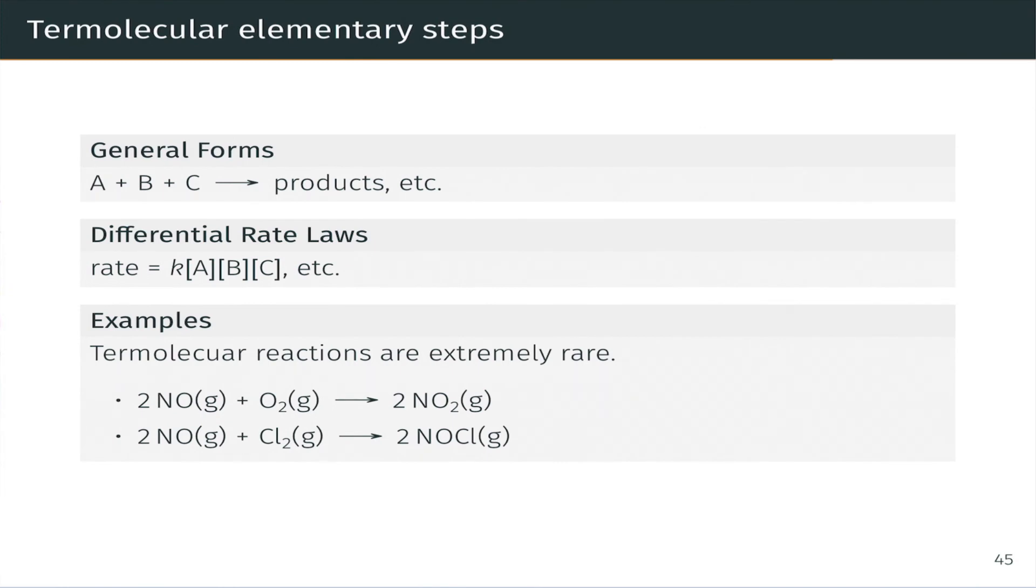Although they're rare, in some cases we can observe termolecular steps in which three total molecules are involved. For example, A plus B plus C going to products, or 2A plus B, or 3A going to products. And these are extremely rare because they depend on three molecules colliding at once or in a very short timeframe, which is highly unlikely for entropic reasons.